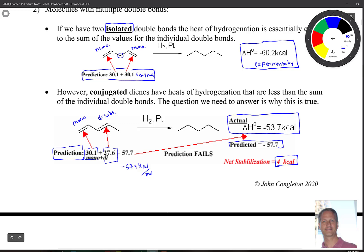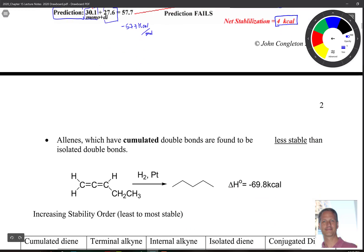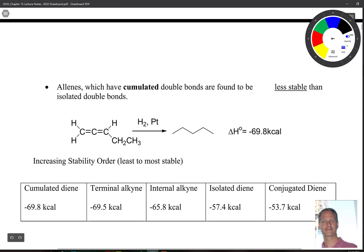So there's isolated, now we have conjugated, and then we have cumulated. So cumulated is, they're just not stable. So when we have these, these things are called allynes. And when we have these double bonds next to each other, they're found to be less stable than the isolated double bonds.